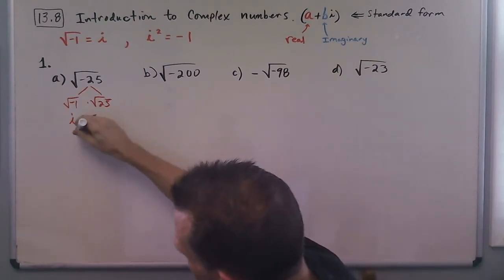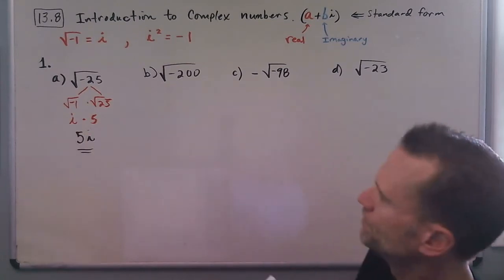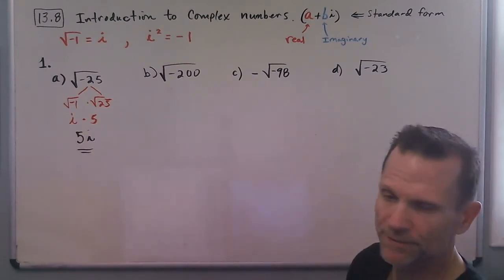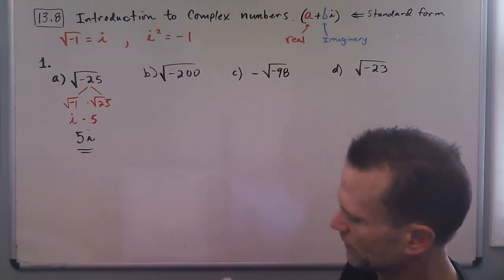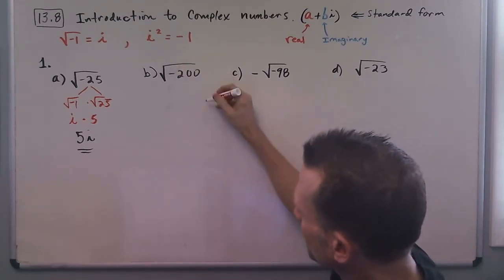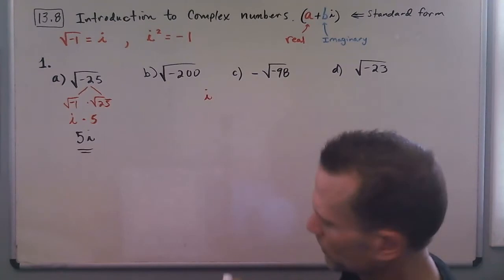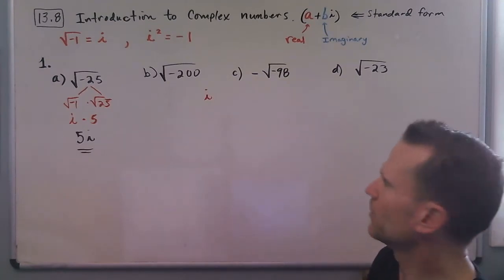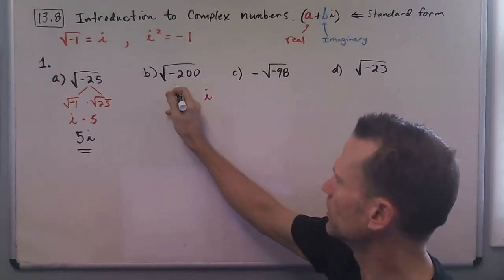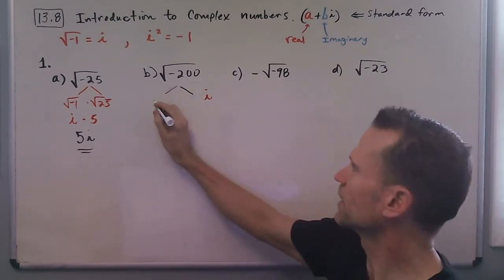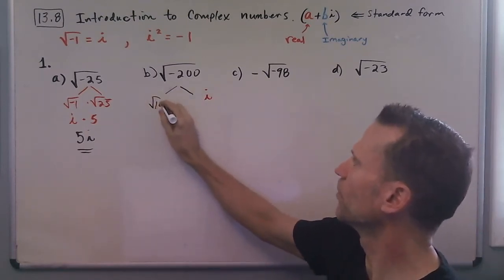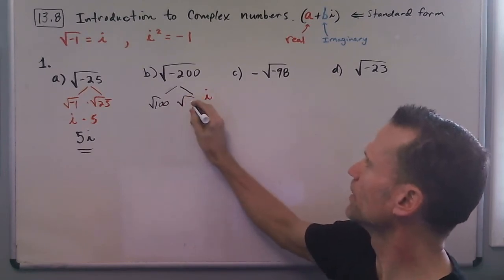Okay, then looking at the square root of negative 200, we can spot that negative sign in there. We know there's going to be an i involved with this answer, and then we can approach the 200 how we've done before. We can think of that as the square root of 100 times the square root of 2.